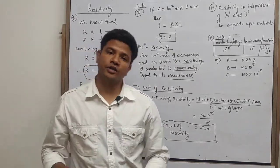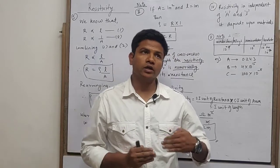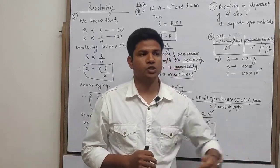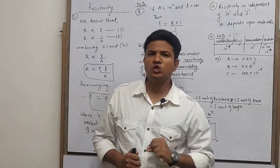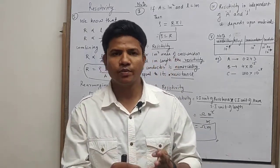So let us continue with another topic, that is resistivity. Now in the previous lectures we saw that the resistance of the conductor depends on four factors: length, area of cross section, temperature, and material.